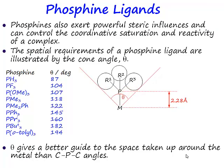How do you assess steric properties? It was very easy to assess the electronic properties because we could measure them directly using the carbon-oxygen bond strength as our probe. First, you need to consider what parameters you are actually going to measure. What we do is measure an angle — not the carbon-phosphorus-carbon angle, but an angle from the metal to the outsides of the substituents. If you measure that angle from the metal to the outsides of the substituents, that is given the name Tolman's cone angle.